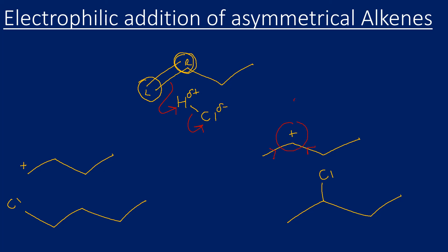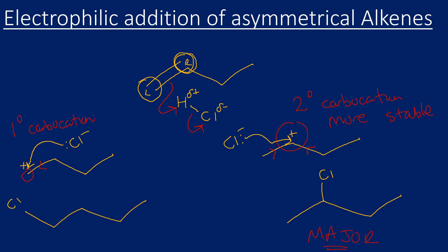So we have two possible carbocation intermediates. The one on the right has two R groups — this is a secondary carbocation. The one on the left only has one R group — this is a primary carbocation. A secondary carbocation is more stable because it has two electron-pushing R groups, so the major product is formed from the secondary carbocation and the minor product from the primary. That gives us 2-chlorobutane as the major product and 1-chlorobutane as the minor product.